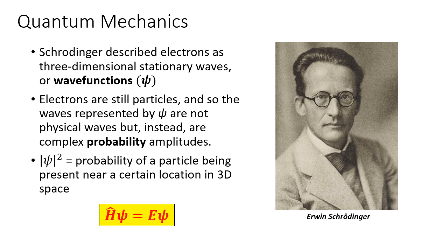Classical physics governing macroscopic objects cannot be used for very small things such as atoms and molecules — it just doesn't work. Erwin Schrödinger, credited as the father of quantum mechanics, described electrons as three-dimensional stationary waves or wave functions. The electrons are still seen as particles, and the waves represented by psi — the Greek letter — are not physical waves but are considered probability amplitudes. Taking the magnitude squared of the wave function tells us the probability of finding a particle in a certain location in 3D space. We can never say where an electron is with 100% certainty; we can only say where there's a high probability of finding it.